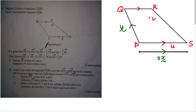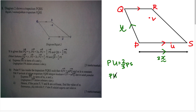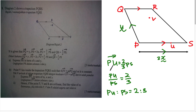Whenever I see a fraction, I rewrite it as a ratio to make it easier to understand. PU equals 2/3 of PS, so PU over PS equals 2/3, meaning the ratio of PU to PS is 2:3. That tells me PU is 2 parts and PS is 3 parts total.